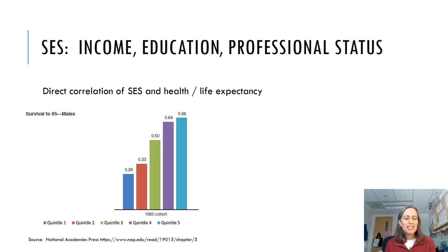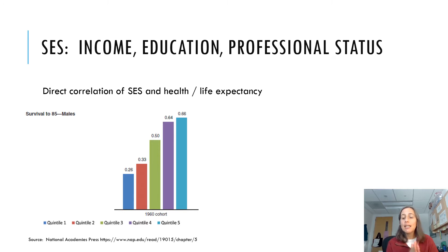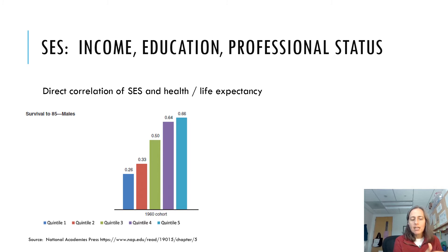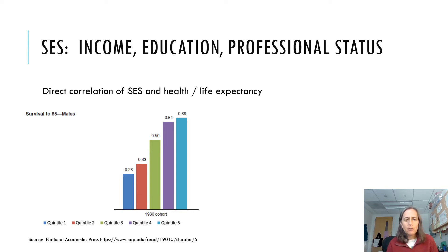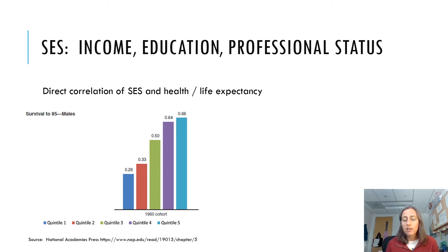In one really interesting study, they looked at your likelihood of making it to age 85, which is higher than average life expectancy, based on your income quintile. Quintile one is the lowest 20% of population by income; quintile five is the richest 20%. The impact is huge. If you're in the lowest income quintile, you only have about a 26% chance of making it to age 85. But if you're in the fourth or fifth quintile, you have about a 65% chance.